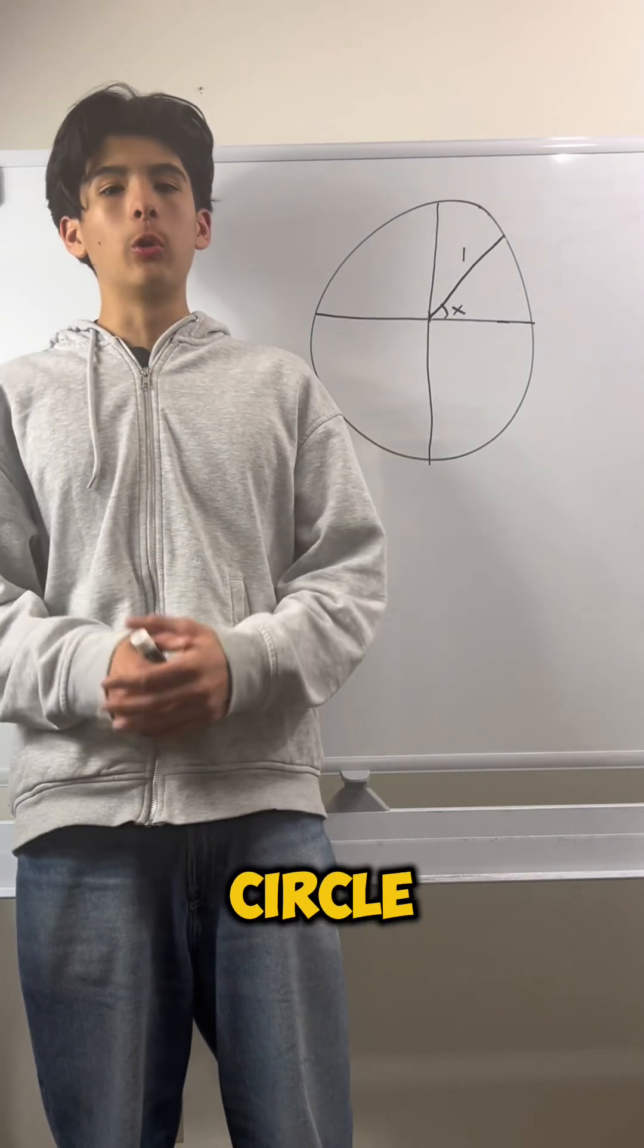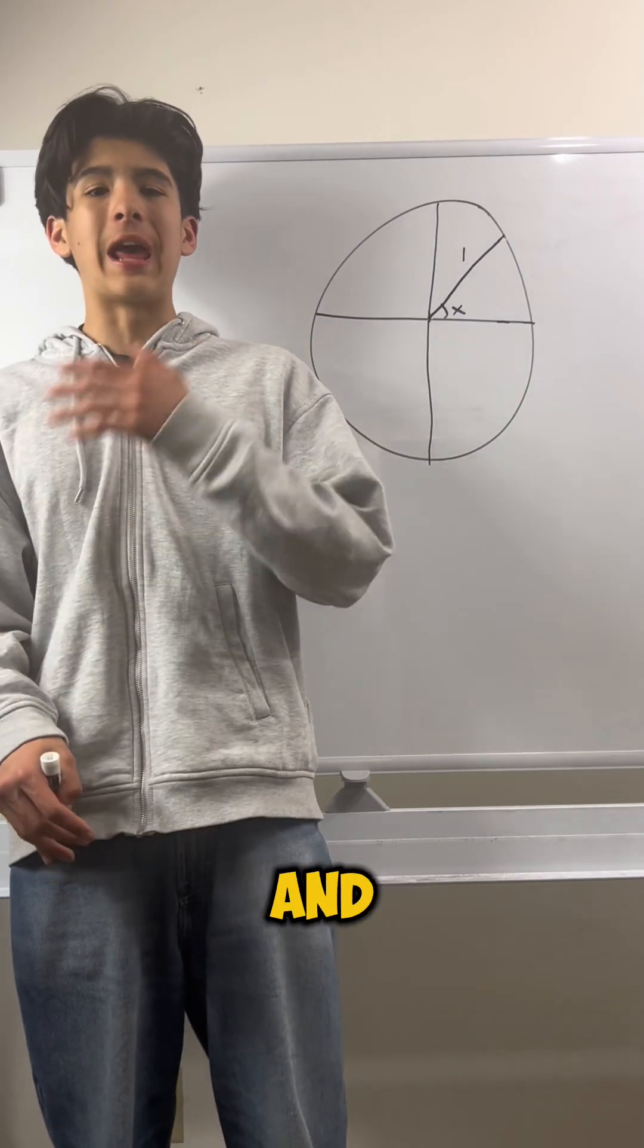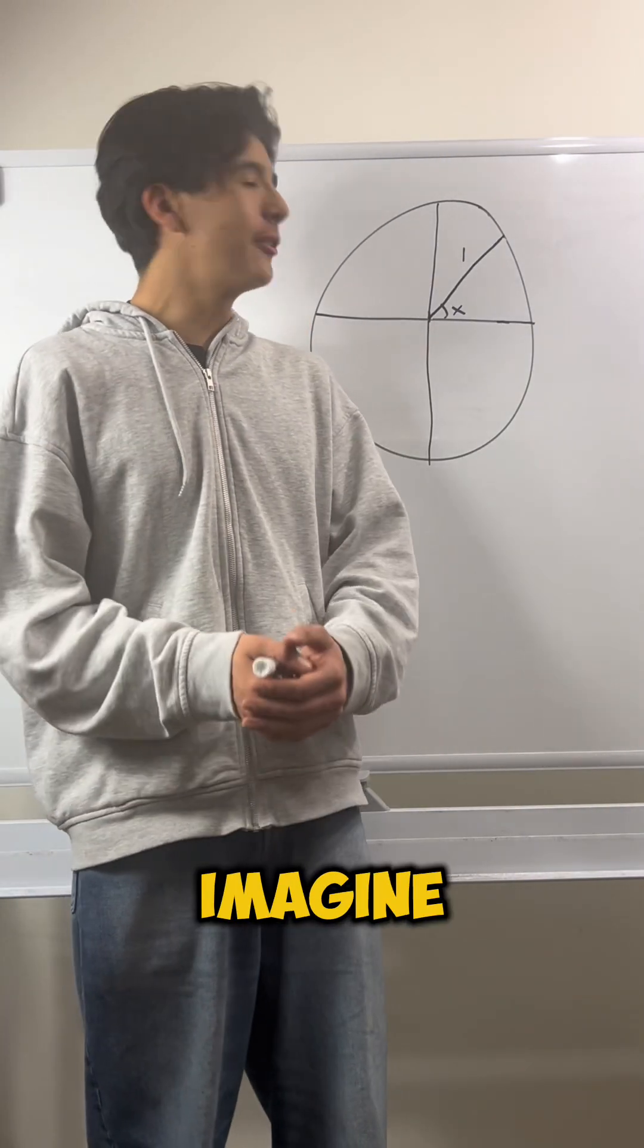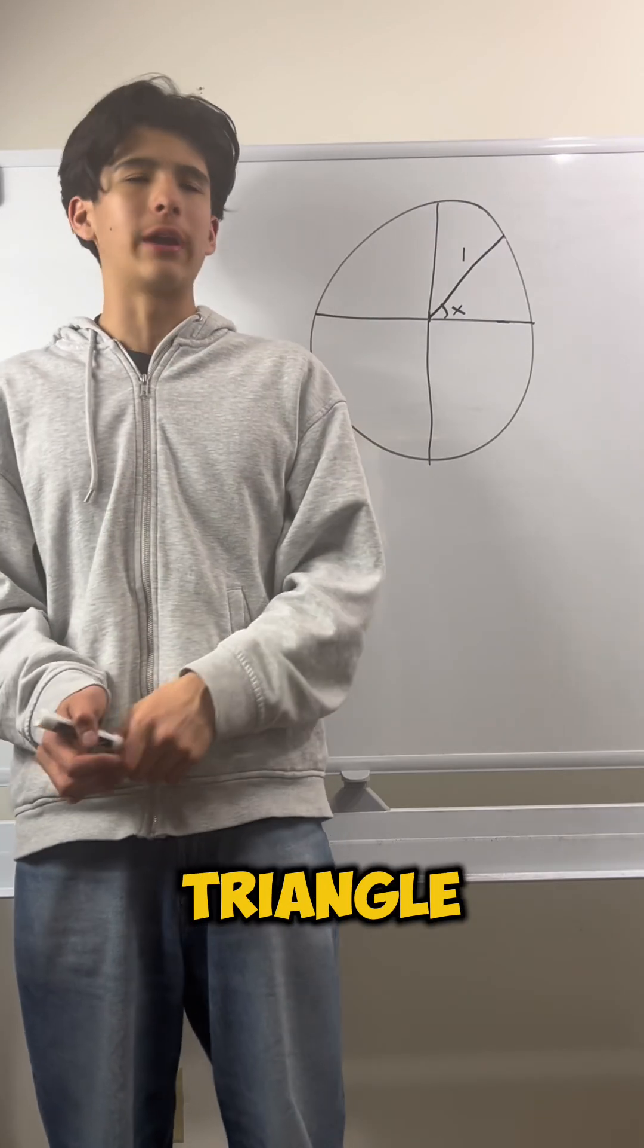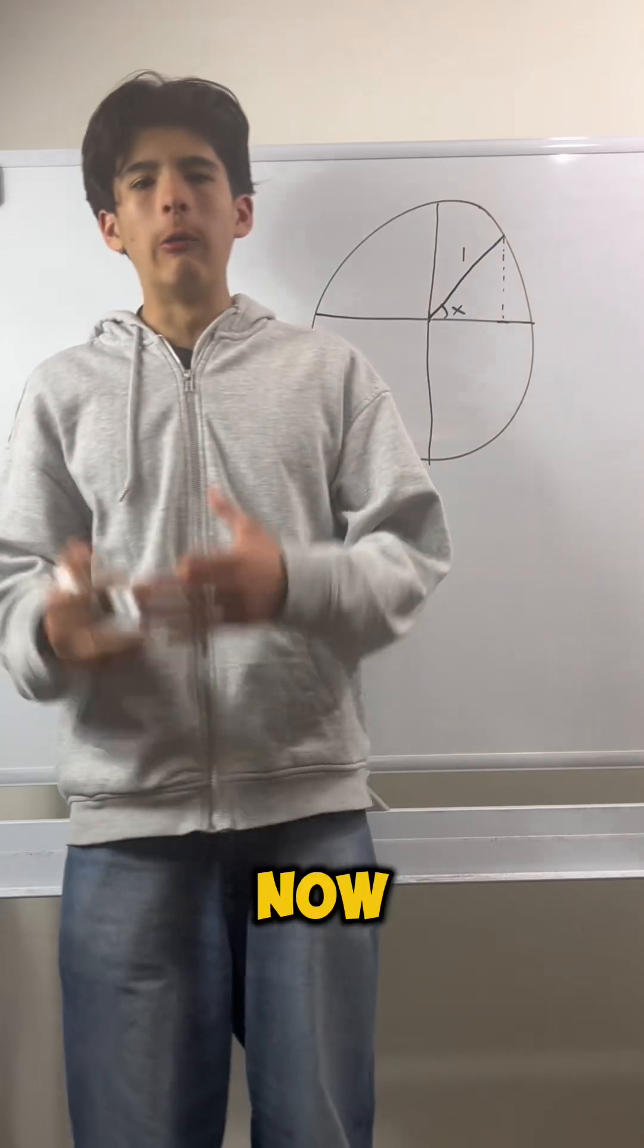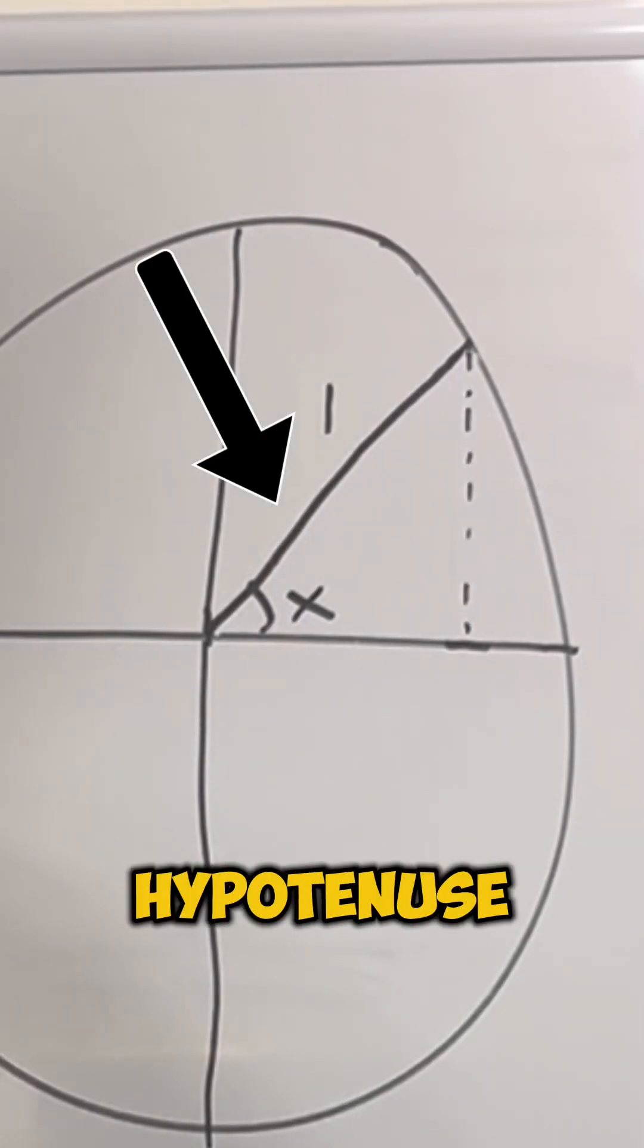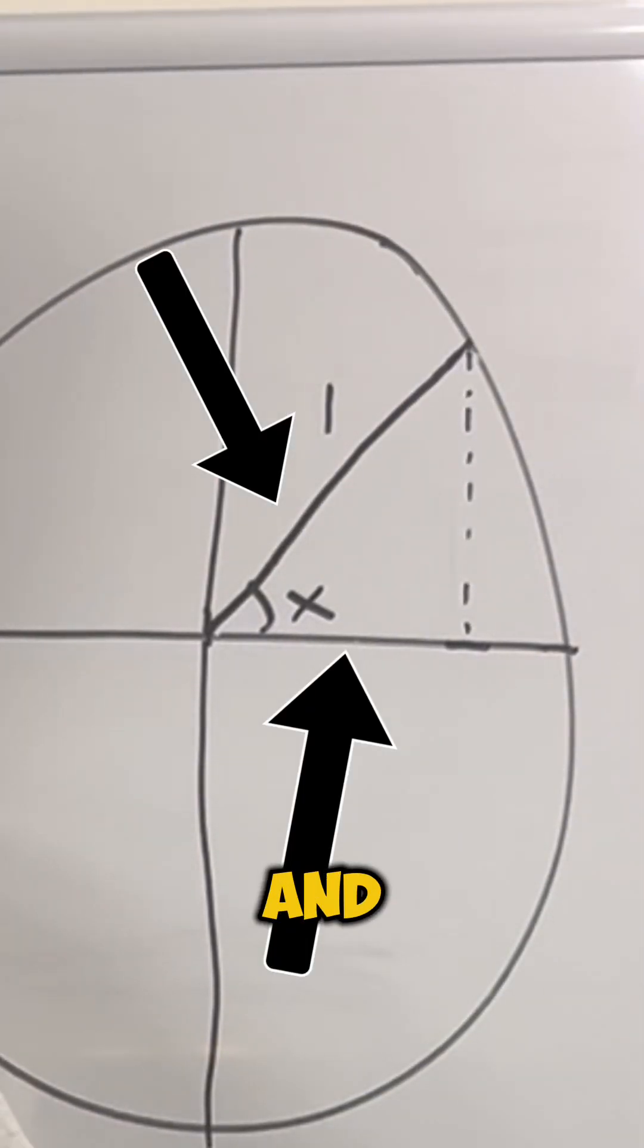Now, with this unit circle, we can define what sine, cosine, and tangent are. So, imagine we drew another line from this point to the x-axis in order to make it a triangle. Now, in this triangle, this would be the hypotenuse. This would be a leg, and this would be another leg.